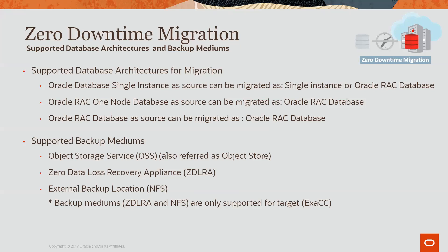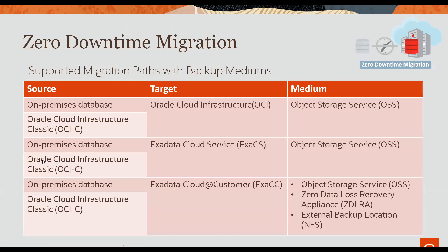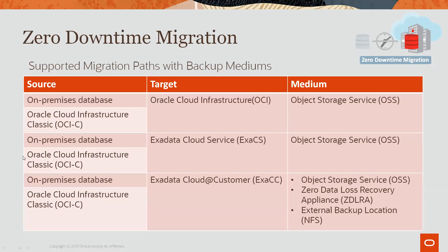Let's look at the supported database architectures and backup mediums. If you have a single instance database as a source, it can be migrated as either a single instance or an Oracle RAC database. If you have an Oracle RAC One Node database as a source, it can be migrated as an Oracle RAC database. If you have an Oracle RAC database as a source, it can also be migrated as an Oracle RAC database. Supported backup mediums are OSS, Zero Data Loss Recovery Appliance (ZDLRA), and an external backup location such as NFS. Note that ZDLRA and NFS are only supported when you have XRCC as a target. For migrating on-premises or OCIC databases to OCI or XRCS, the supported backup medium is object store. For migrating to XRCC, supported backup mediums are OSS, ZDLRA, and an external backup location such as NFS.